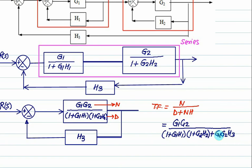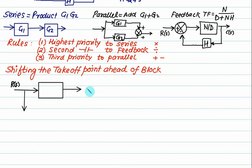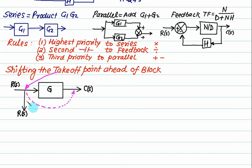Again, this is operation number 4: shifting the takeoff point ahead of the block. So let's write this. This one is R of S, this one is C of S, this one is block G, and this one is R of S — so this one is also R of S. So this one we are calling as the takeoff point. And what we desire is to shift this takeoff point forward. That modification I will show you in the next figure.